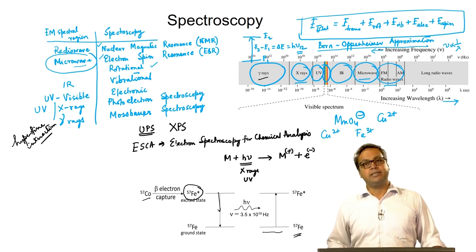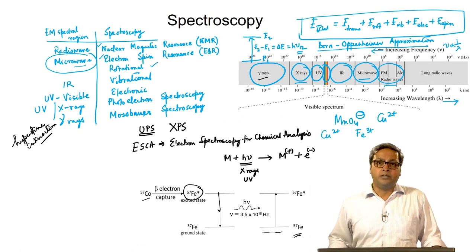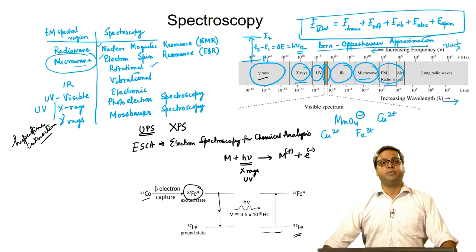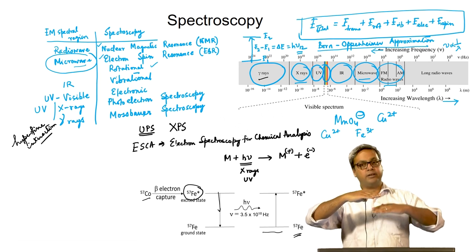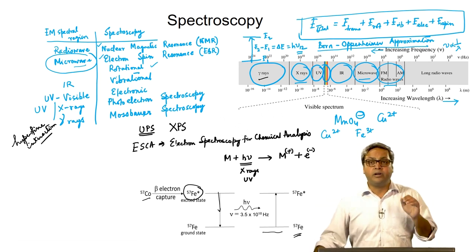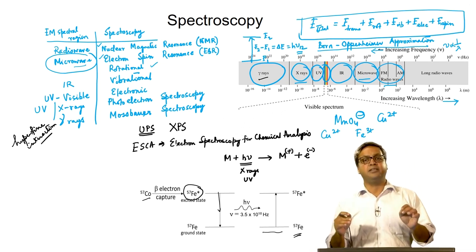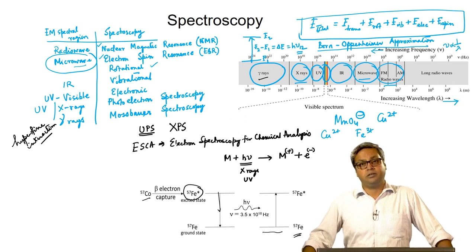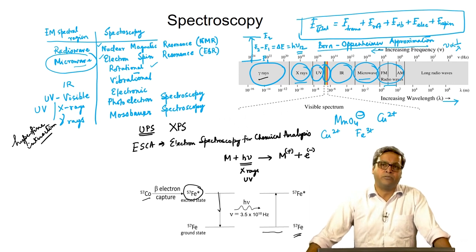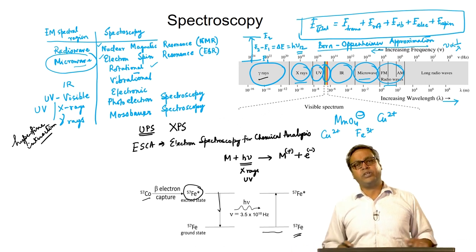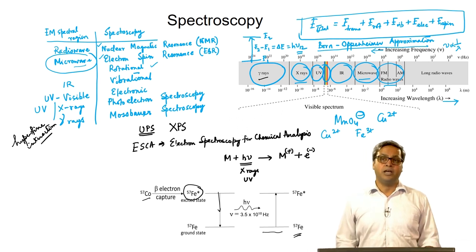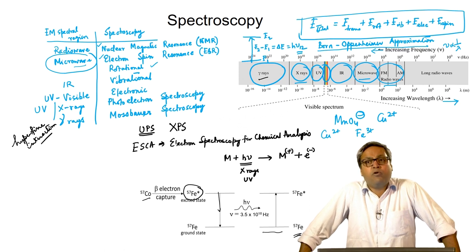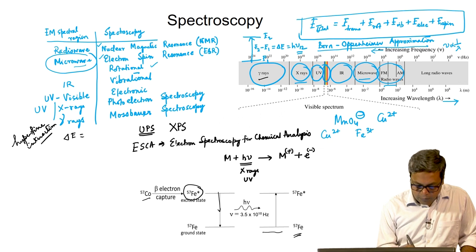Another type of spectroscopy is Raman spectroscopy, which differs from the others discussed. In other spectroscopies, a transition takes place directly from the initial stationary state to the final stationary state. But in Raman spectroscopy, a direct transition does not happen; rather, the transition takes place via an intermediate virtual state. We will discuss these different forms of spectroscopy in greater detail later.